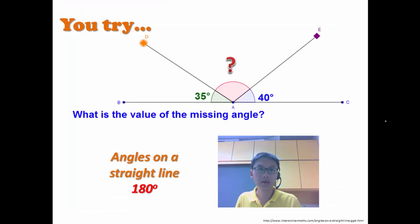Why don't you try? Let's say I have this angle, DAB, 35 degrees, EAC, 40 degrees. What will this angle, DAE, be? So, just remember, angles on the straight line is 180 degrees. Have fun! Let's go.